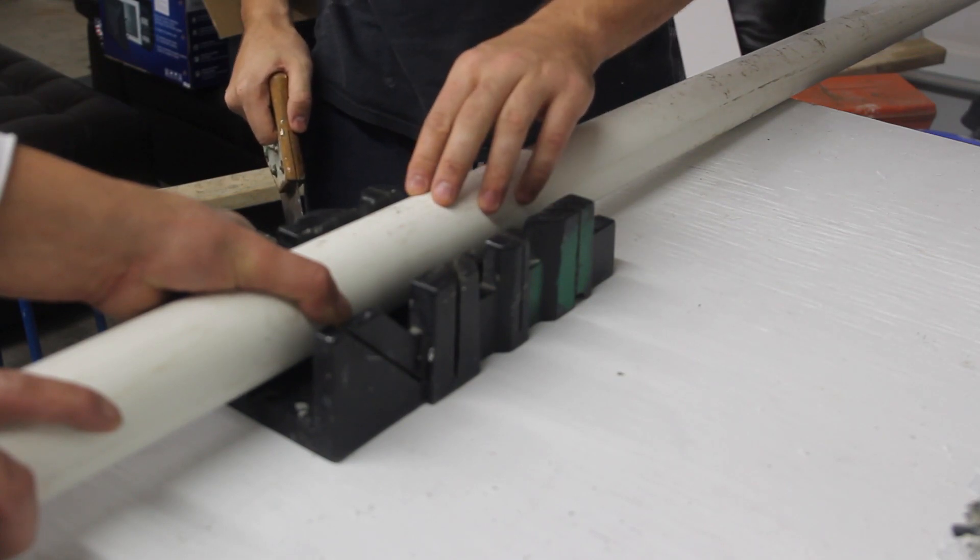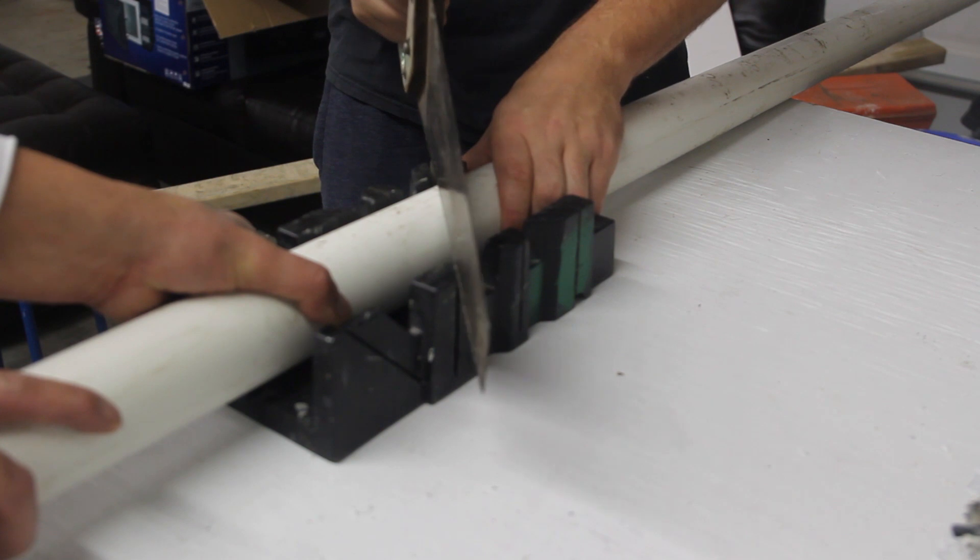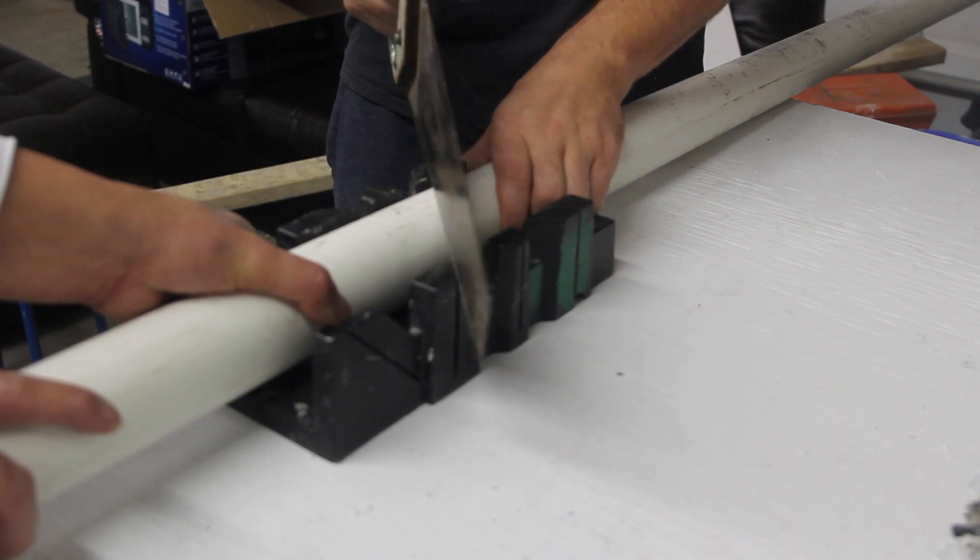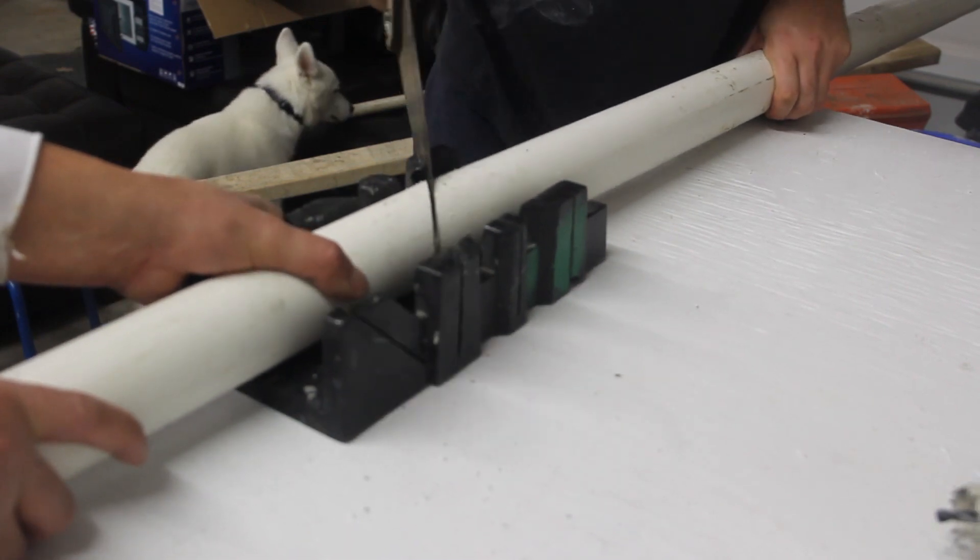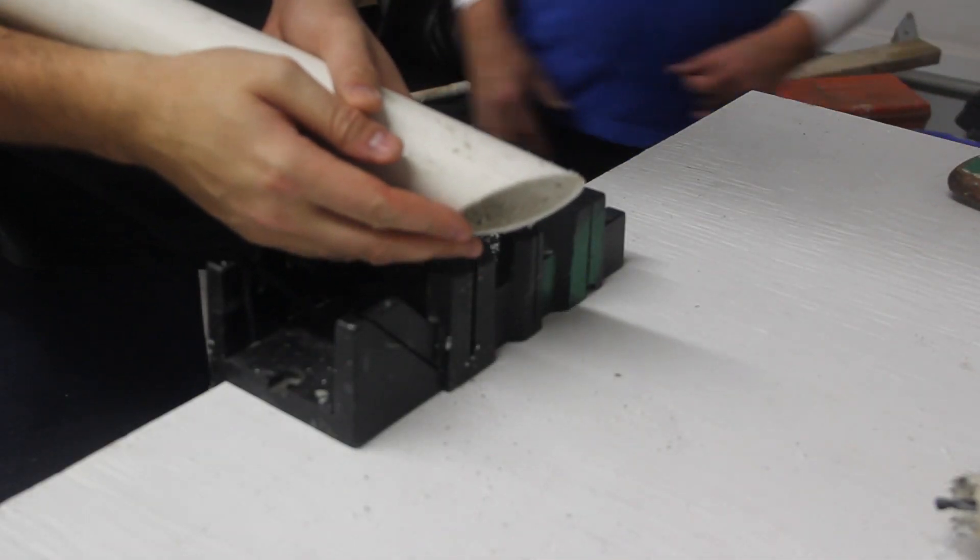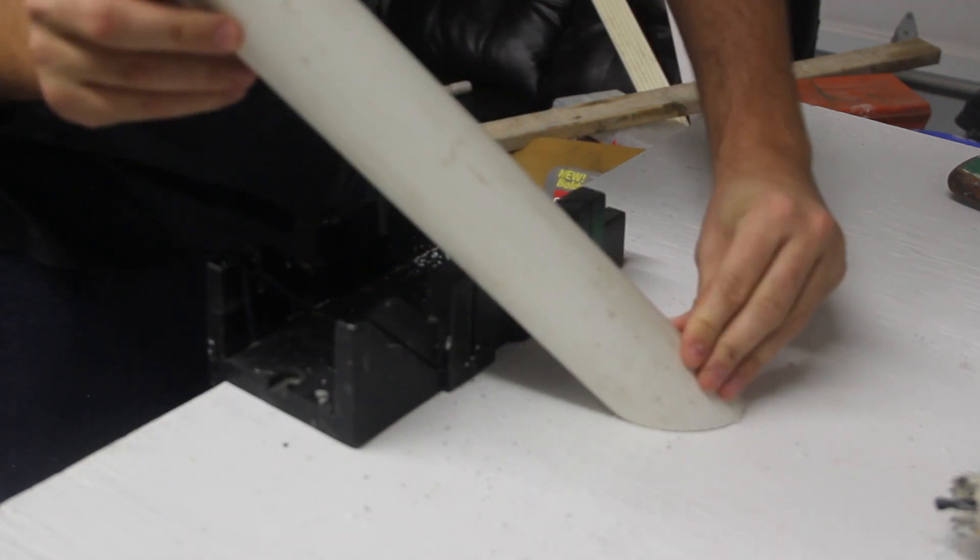We're gonna grab PVC pipe and put it in a miter box to get 45 degree angle, perfect 45 degree angle right here. Alright, we got here, over here, 45 degree angle, so it's gonna stand like this.